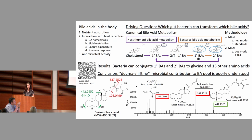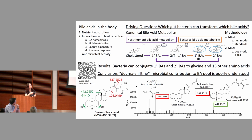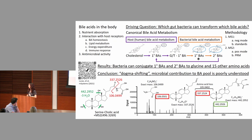We have time for a question or two. What can you tell us about the choice to use positive and negative mode for this type of molecule? We were mostly looking at primary and secondary bile acids, which have a carboxyl group on the end, so negative mode is how they ionize best. But when we looked at conjugated bile acids, they have the amino acid there and actually ionize better in positive mode. We did a quick test to confirm retention times weren't shifted between the two modes.